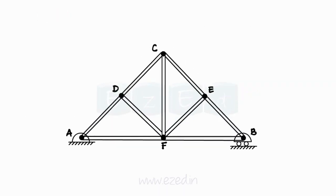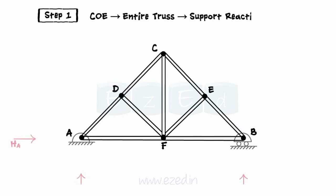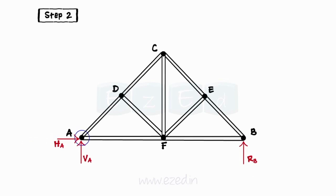The following steps are followed while analyzing a truss using method of joints. Step 1: We will first apply conditions of equilibrium to the entire truss to calculate reactions at all the supports. Step 2: Select a joint from the truss which only has two members with unknown forces.